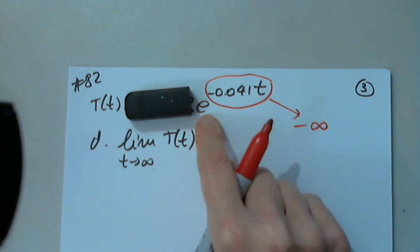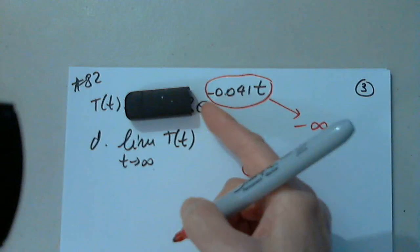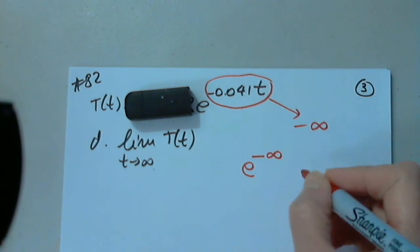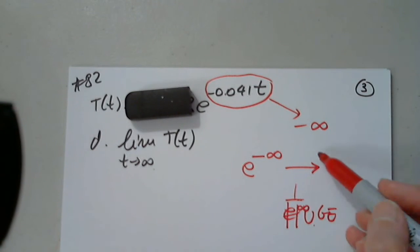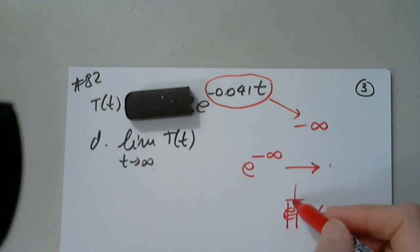Now I need to discuss where e to negative infinity is going. Always remember this is 1 over e to infinity, which is huge. Where will 1 over huge go?